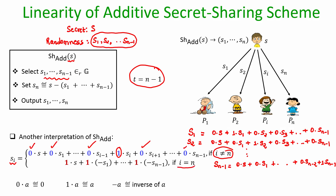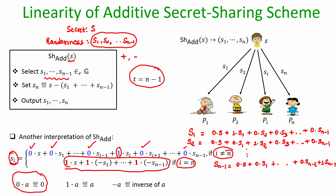When it comes to the nth share, it depends not only on S but also on S_1, S_2, …, S_{n-1}. Since all operations are performed over the group, the dot operation here means: 0·A denotes the additive identity, 1·A denotes the element itself, and -A denotes the additive inverse of A. So we can express each share as a linear function of the secret and the randomness.